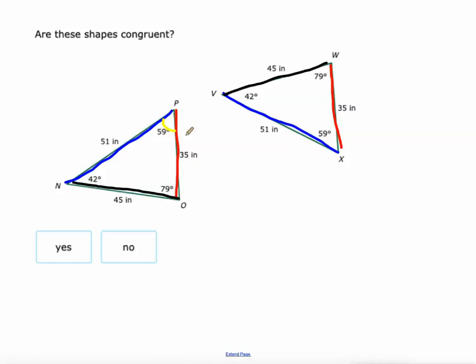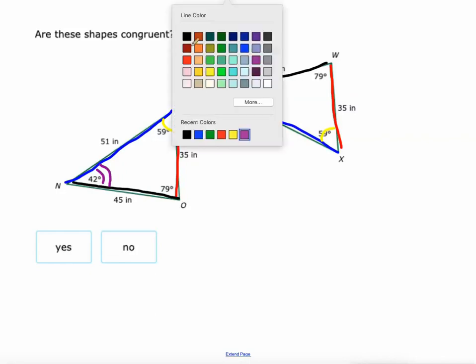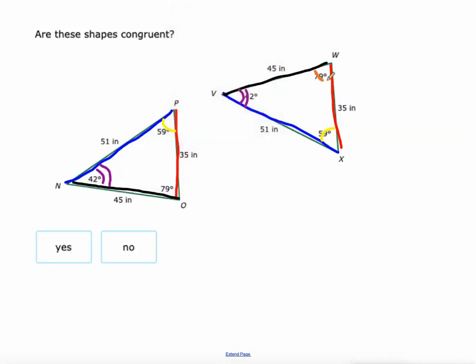We have an angle of 59 and here's another angle of 59. An angle of 42 that's congruent to this angle of 42, and how about this angle of 79 and this angle of 79. So all the pairs of corresponding sides and corresponding angles are congruent. So definitely yes, these are congruent.